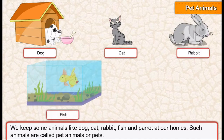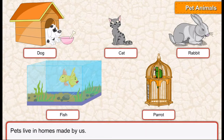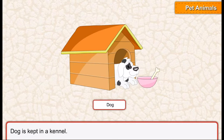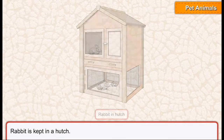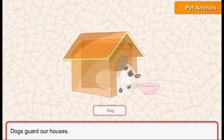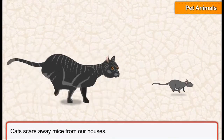Pet animals — we keep some animals like dog, cat, rabbit, fish, and parrot at our homes. Such animals are called pet animals or pets. Pets live in homes made by us. Fish are kept in an aquarium, dogs are kept in a kennel, rabbits are kept in a hutch, and parrots are kept in a cage. Dogs guard our houses and cats scare away mice from our houses.